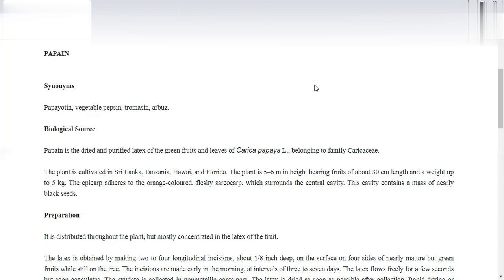Biological source: papaya enzyme. When a slit is made, white latex comes out. Papain is the dried and purified latex of green fruits and leaves of Carica papaya. Carica papaya is the botanical name. In the green fruits, it is dried or purified latex. This is the biological source.